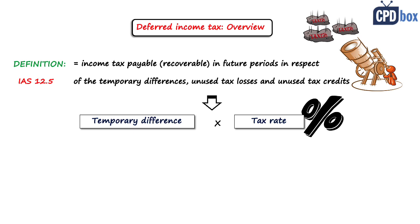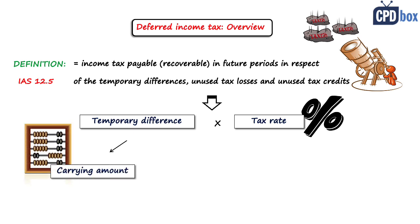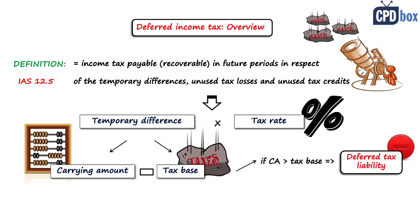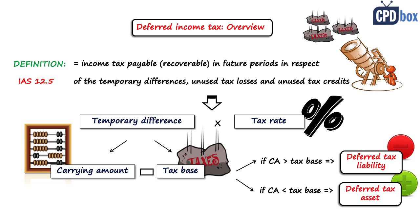The temporary difference is calculated as carrying amount of an asset or liability less its tax base — that's the amount attributed to that asset or liability for tax purposes. If carrying amount is greater than the tax base, you have a taxable temporary difference resulting in a deferred tax liability. And if carrying amount is smaller than the tax base, you have a deductible temporary difference resulting in a deferred tax asset. Some of you might argue it's different for assets and liabilities, but I will explain that a bit later.